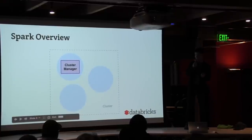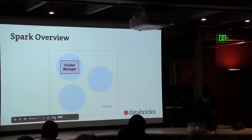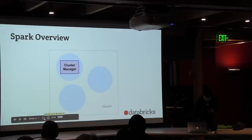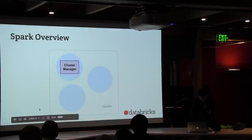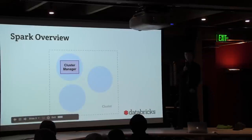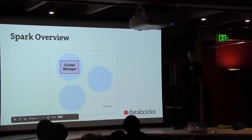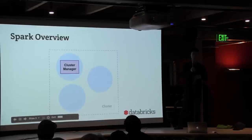As a quick refresher, here's a typical Spark architecture. Your cluster has a cluster manager — this is the thing that gives out resources to applications. In our earlier example, this was the one that gave out 13 executors to the first application and one executor to the second application. Every cluster has a set of resources, typically in terms of cores and memory.